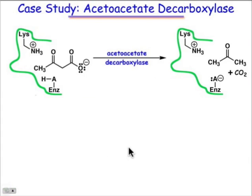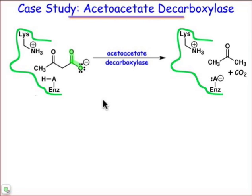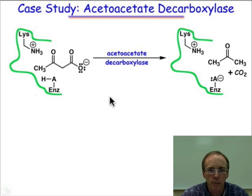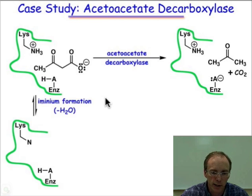Let's take a look at the actual example: acetoacetate decarboxylase. Here's the overall reaction. Acetoacetate is a dicarbonyl compound where carbon dioxide is lost — a decarboxylation event catalyzed by this enzyme. CO2 is lost, charge balance is maintained; the negative charge is believed to be passed on to an amino acid side chain that was originally in its protonated form. That's the overall stoichiometry.